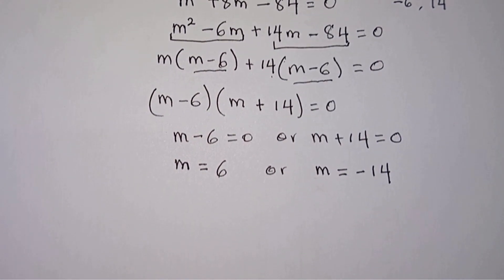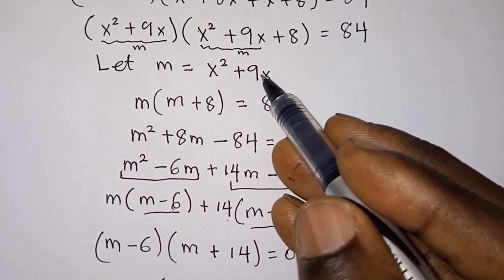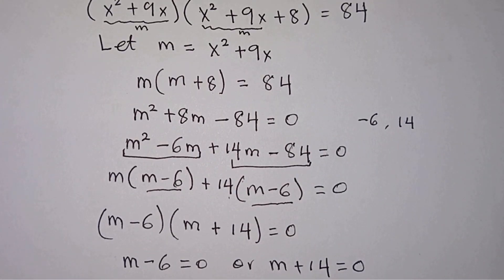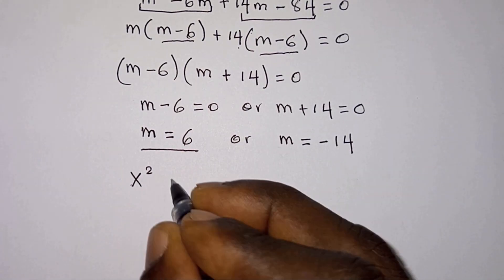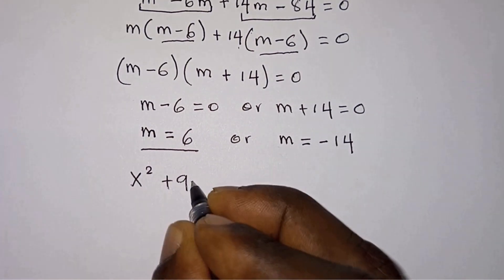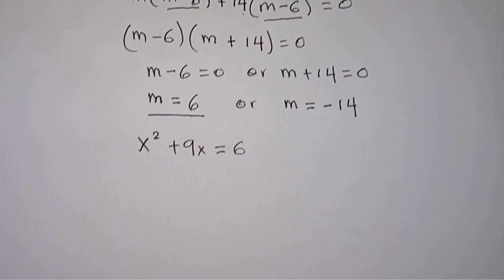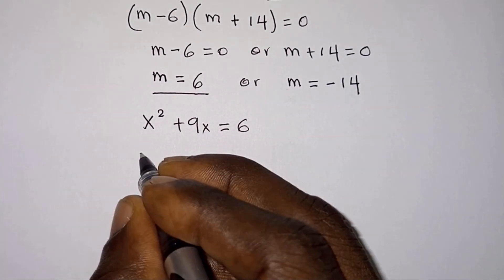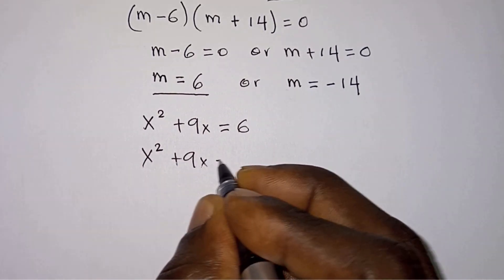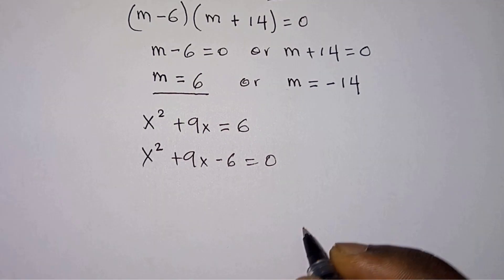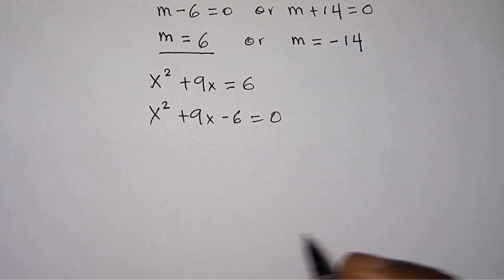Remember we let m equal x squared plus 9x. So when m equals 6, we have x squared plus 9x equals 6. This is a quadratic equation, so we equate everything to zero: x squared plus 9x minus 6 equals zero. Let's use the discriminant to check for real roots.